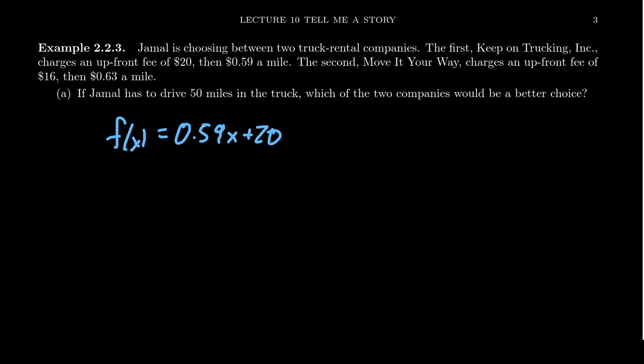So notice here that X is going to be miles, the slope, the rate 0.59 here is going to be cost per mile. So when you take miles times cost per mile, you get cost, add that to cost. This is going to be the cost function for Keep on Trucking.